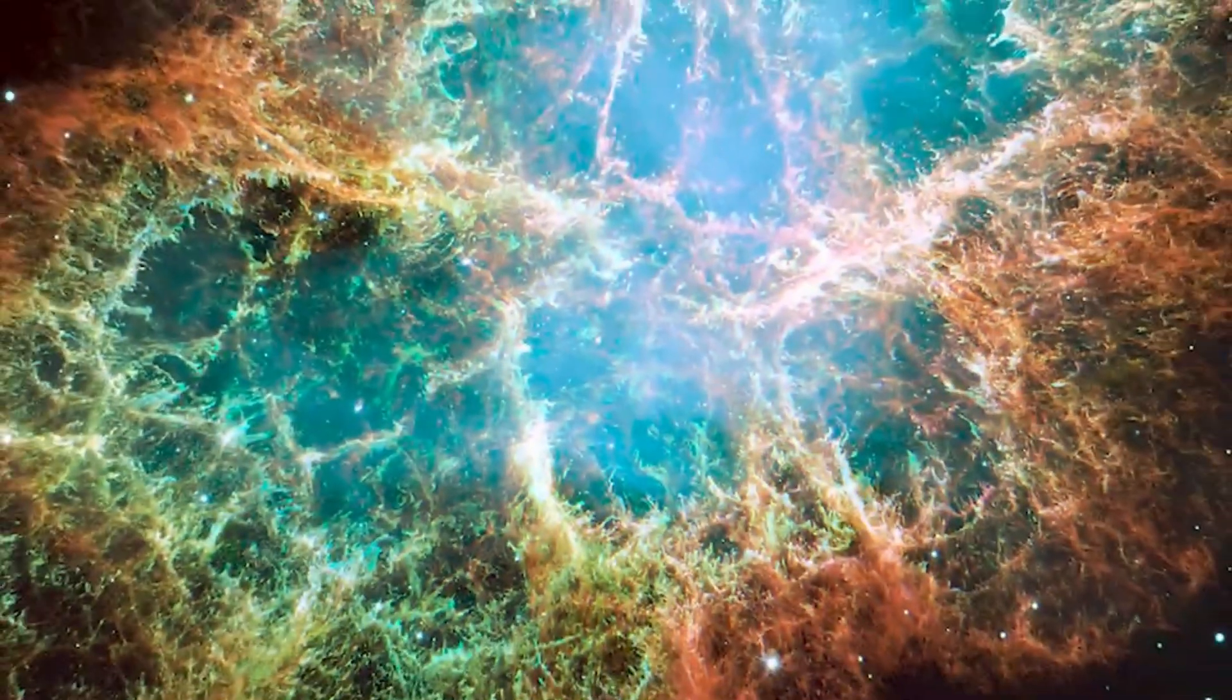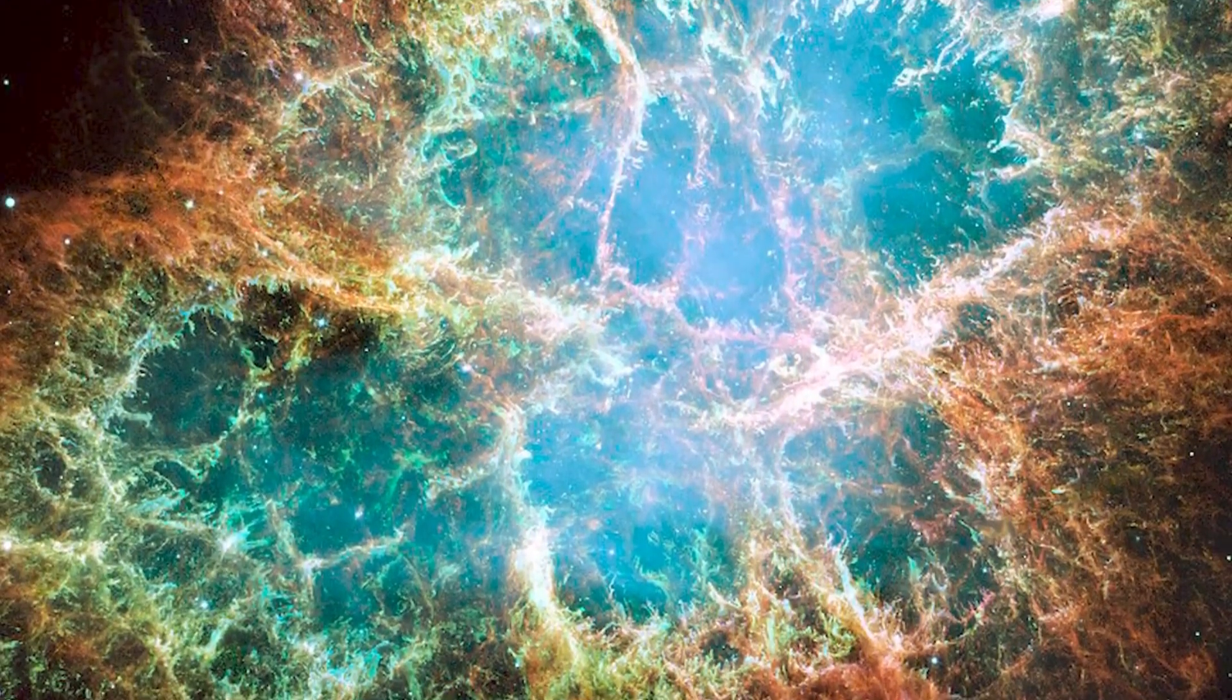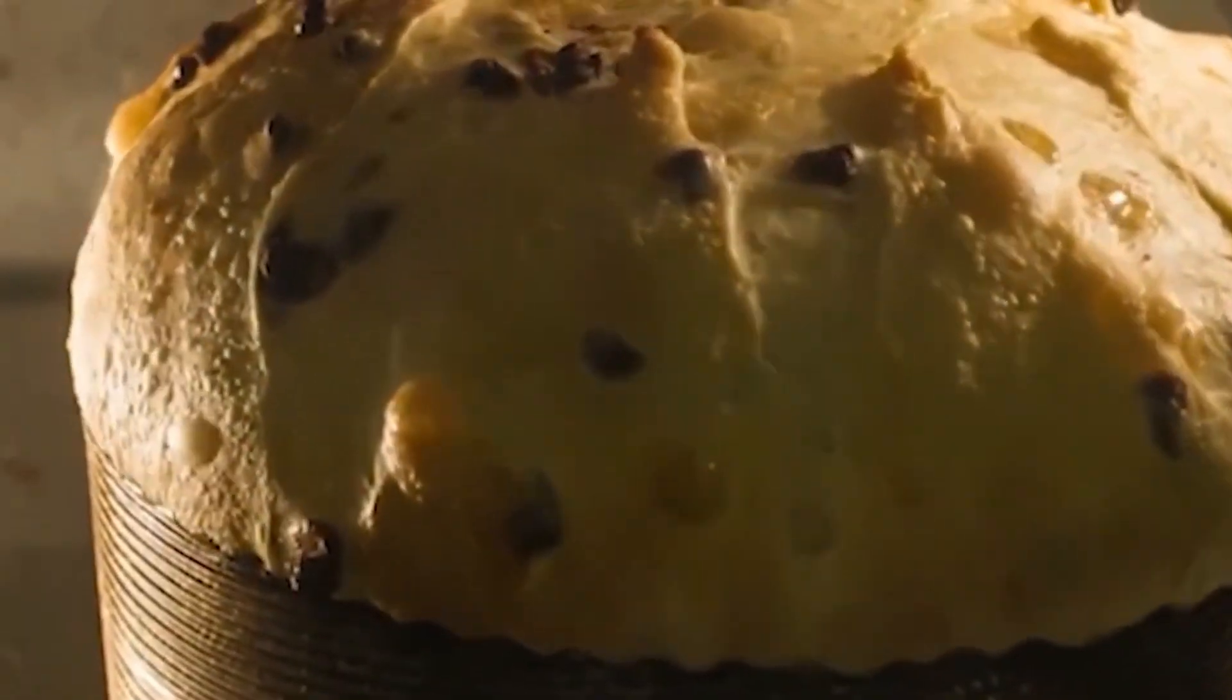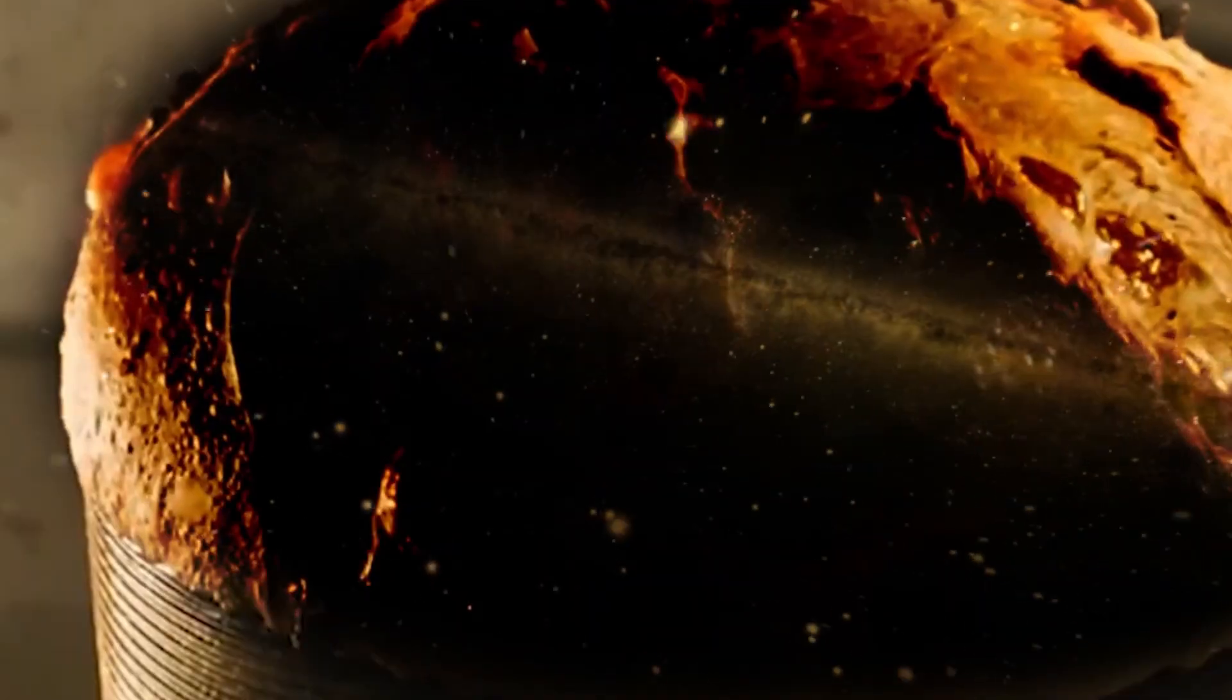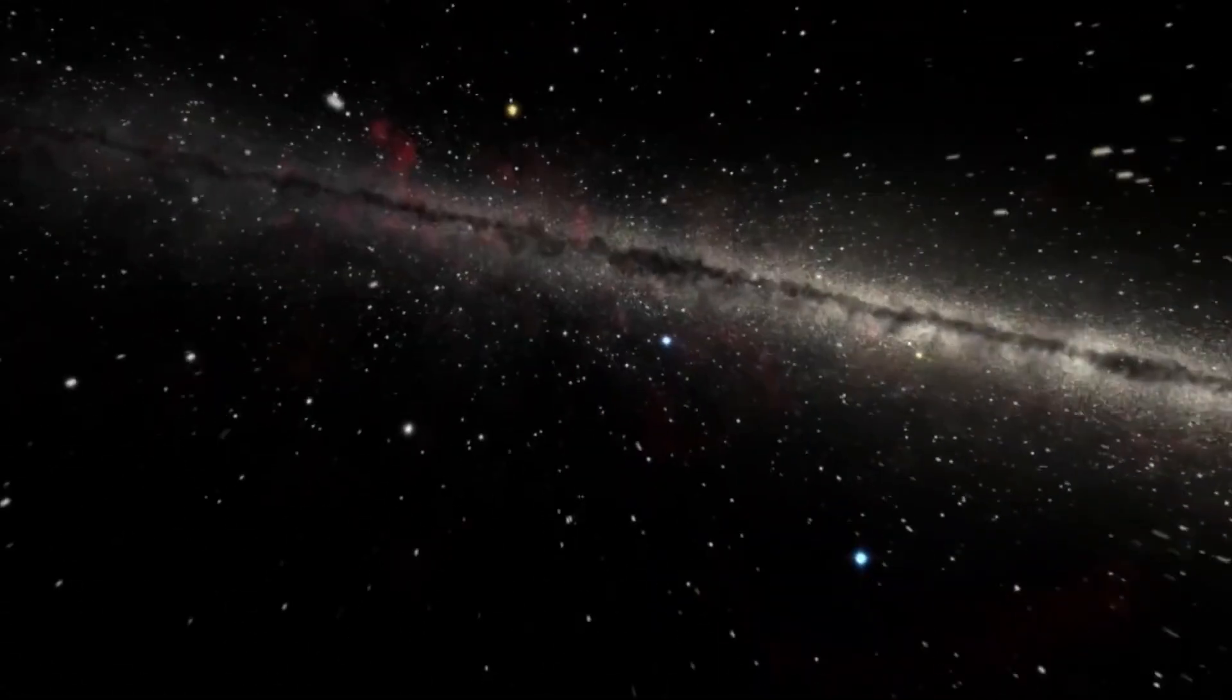In the meantime, a so-called pulsar wind nebula is formed in the remnants of the supernova. This refers to a stream of high-energy particles generated by the extreme conditions prevailing in the immediate vicinity of a neutron star.